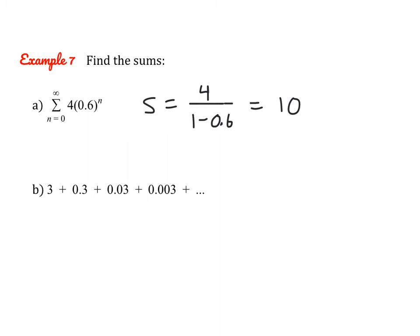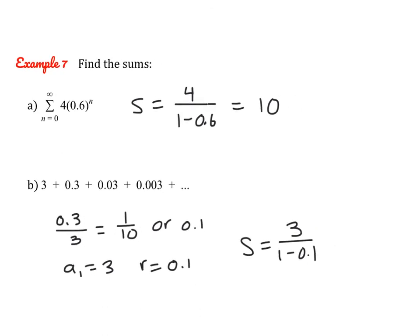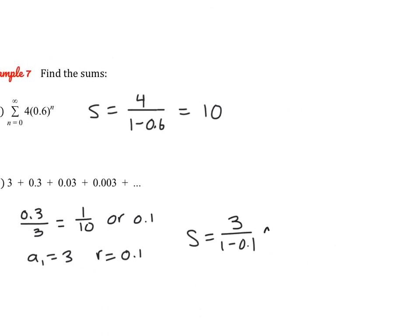For this next problem, we're not specifically told r, but you can tell it's 1 tenth or 0.1. If you're unsure, use the common ratio test: 0.3 divided by 3 gives 1 tenth. So a sub 1 is 3 and r is 0.1. Then 3 over 1 minus 0.1 gives a repeating decimal — approximately 3.33, or you can leave it as a fraction.